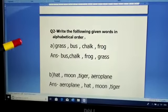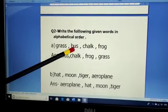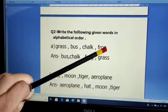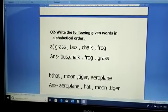So when we read ABC order, B comes first followed by C. So first bus will come here, then chalk followed by frog and at the end grass will be coming.